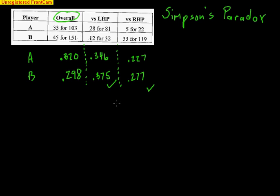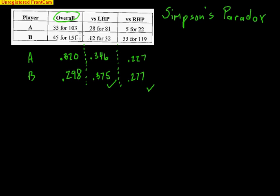This whole idea is what's known as Simpson's Paradox. B hits better against both right-handed and left-handed pitchers, so no matter the pitcher, B is the better choice. So why is his batting average lower? Because B sees a lot more right-handed pitchers than A, and right-handed pitchers are harder to hit. For right-handed pitchers, they're both low — both in the 200s. B sees a lot more pitches from right-handers, so that low number — even though 0.277 is bigger than 0.227 — because so many of B's pitches, 119 of 151, come from right-handed pitchers, this 0.277 is actually weighted more in B's overall value.